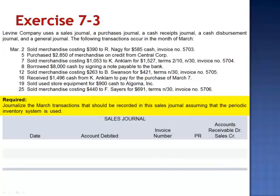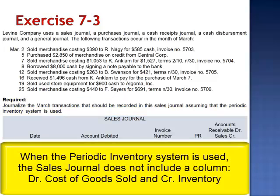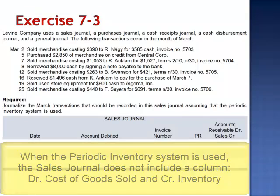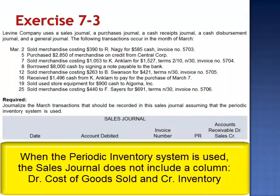Compared with the sales journal that we saw previously, the difference here is that we do not include the columns for cost of goods sold and merchandise inventory. As cost of goods sold is not calculated at the time of the sale in a periodic system, the sales journal will be used to record the sale of merchandise on account.